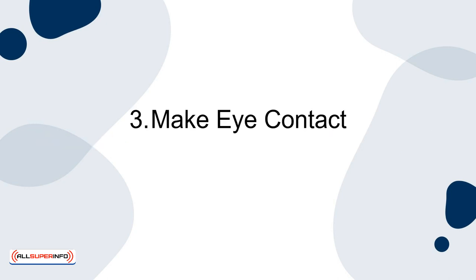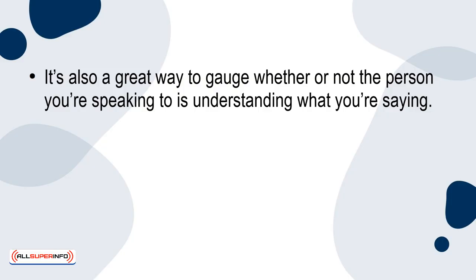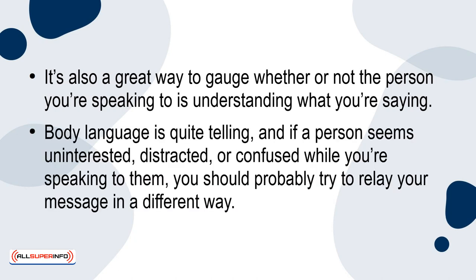3. Make eye contact. You shouldn't stare at the person you're talking to, as this might make them feel uncomfortable. Maintaining regular eye contact with them, though, is a great way to make them feel like they're being listened to. It's also a great way to gauge whether or not the person you're speaking to is understanding what you're saying. Body language is quite telling, and if a person seems uninterested, distracted, or confused while you're speaking to them, you should probably try to relay your message in a different way.